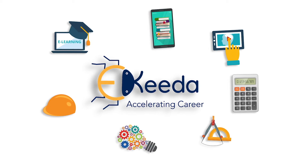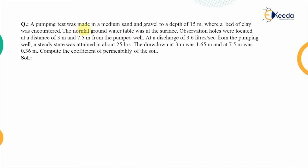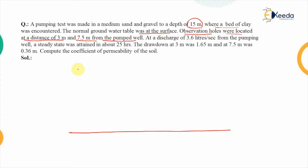Let's start the first problem. A pumping test was made in a medium composed of sand and gravel, carried out up to a depth of 15 meters, after which a layer of clay was encountered. The normal groundwater table was at the surface. Observation holes were located at distances of 3 meters and 7.5 meters from the pumped well. This is the medium of sand and gravel, below which there is a layer of clay.